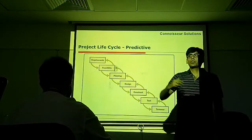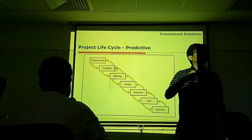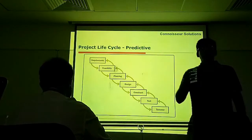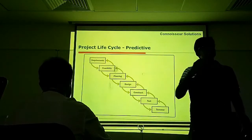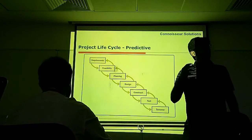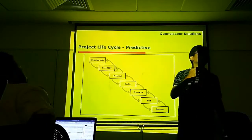So based on the complexity of the project, the projects can have different types of life cycles. The life cycles of the project can be categorized into three categories: predictive life cycle, iterative life cycle, and adaptive life cycle.